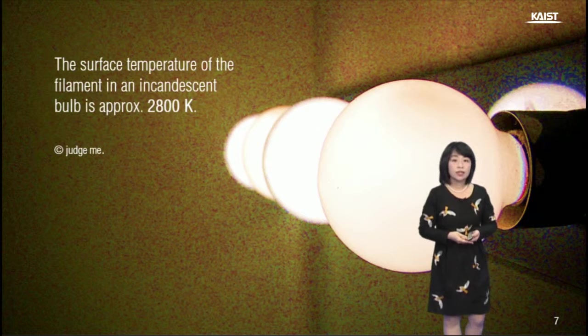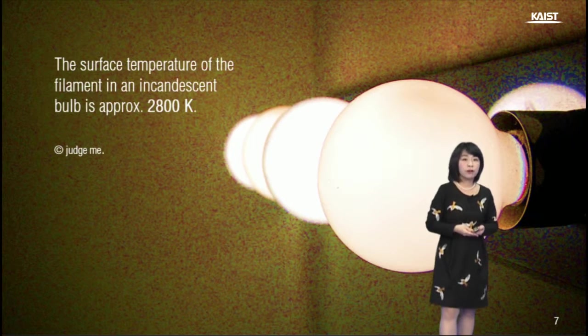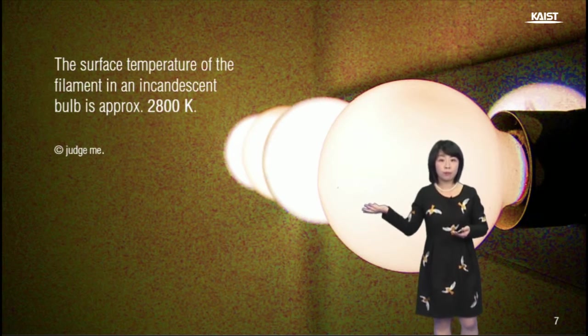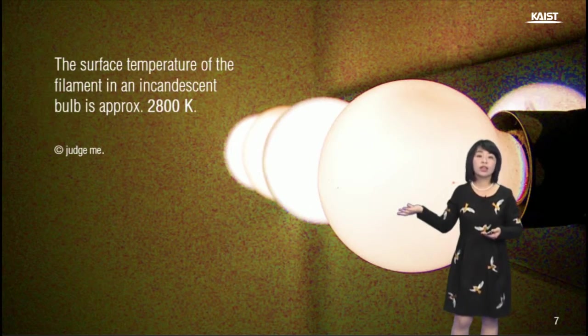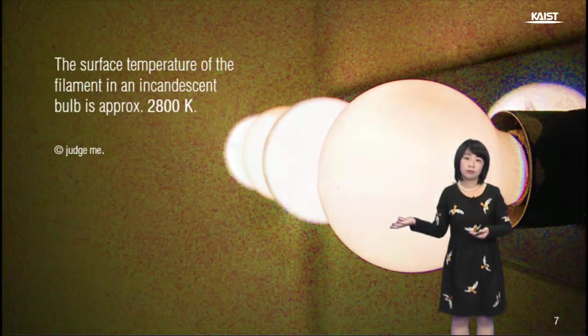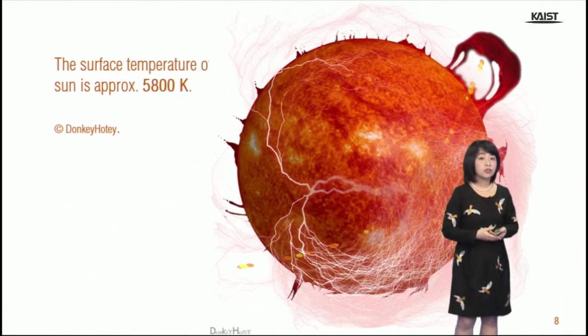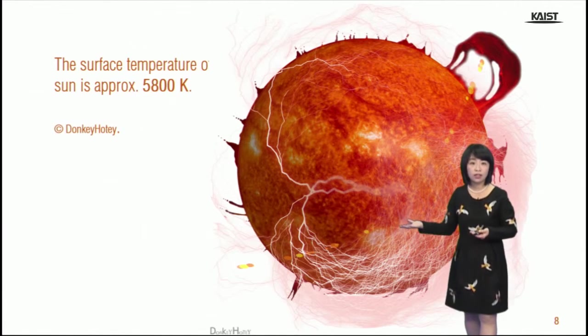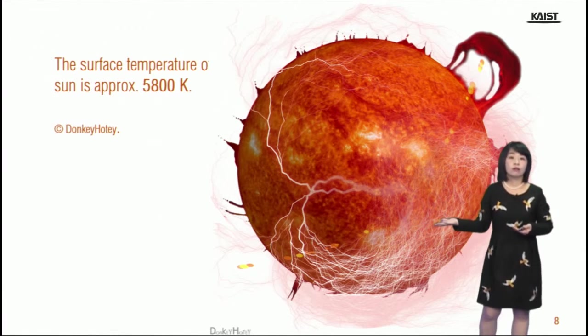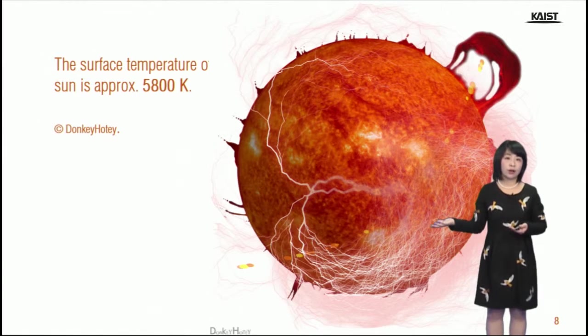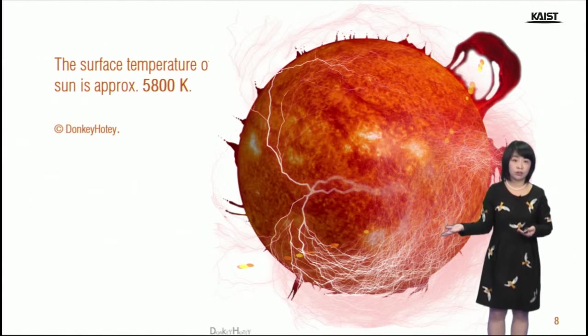For instance, the surface temperature of a filament in an incandescent bulb is approximately 2800 Kelvin. And the surface temperature of the sun is approximately 5800 Kelvin.